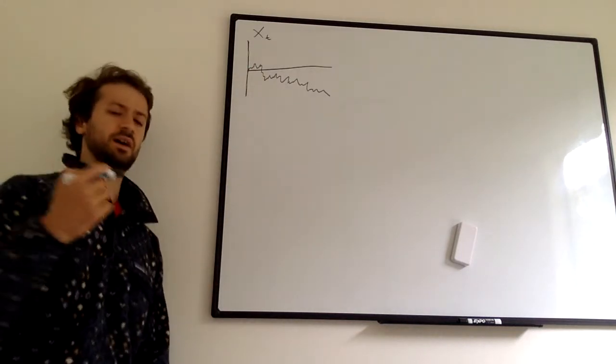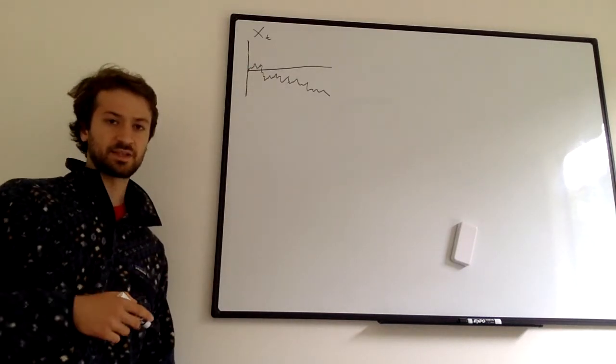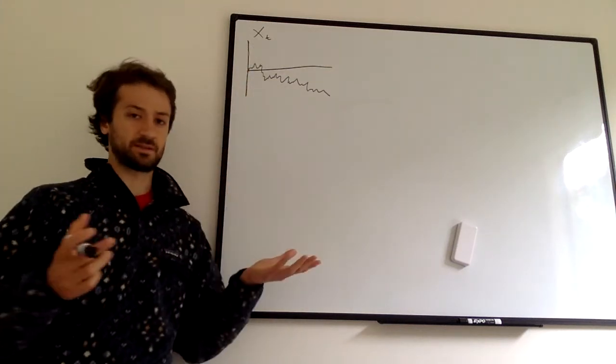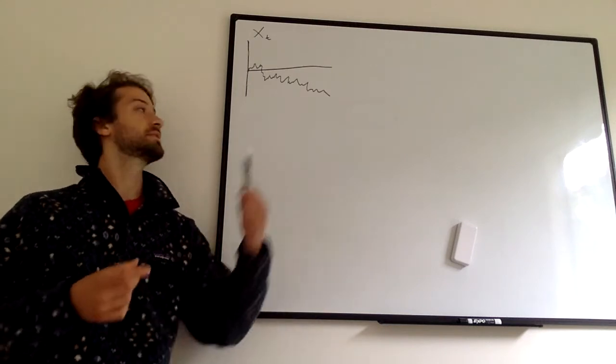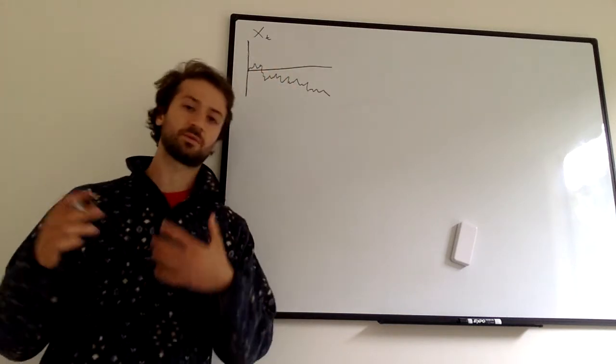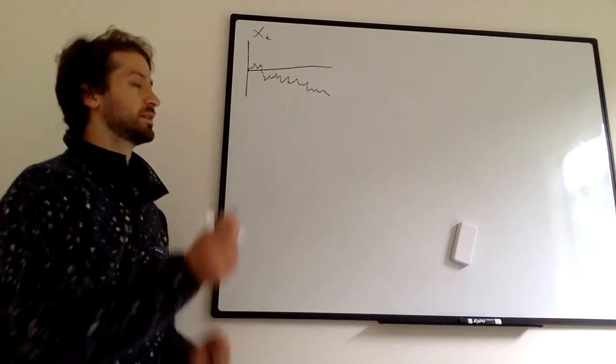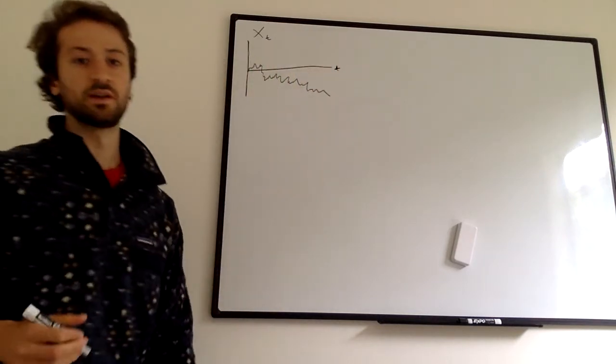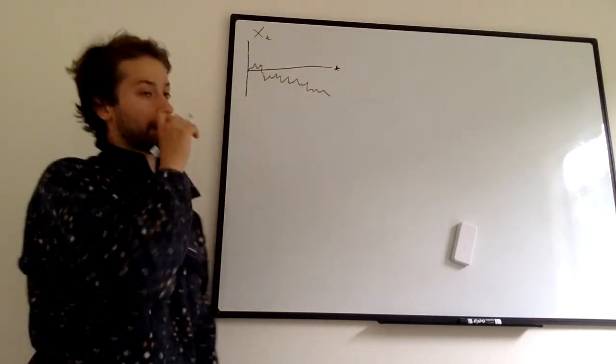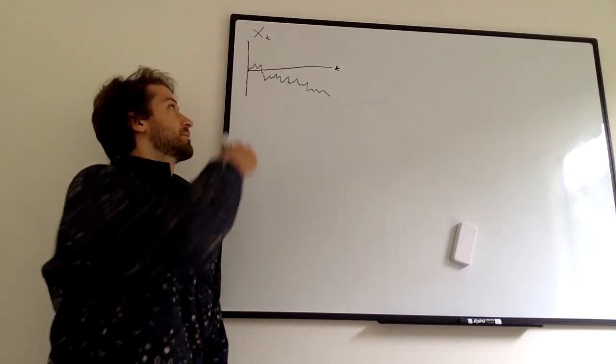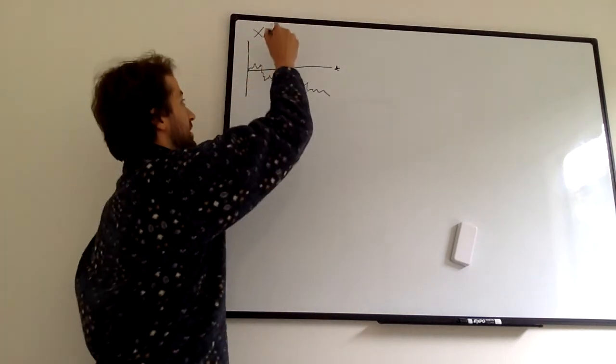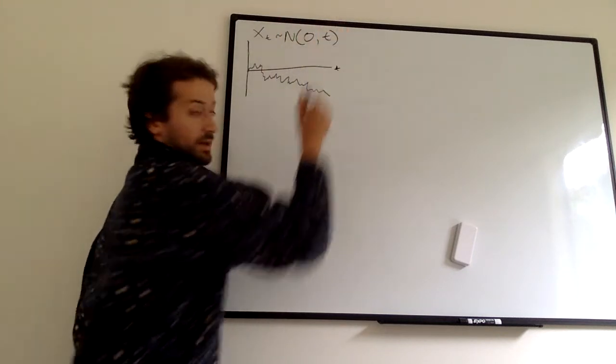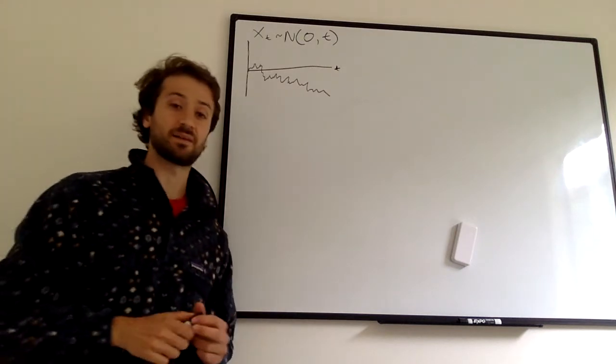Brownian motion is a continuous stochastic process, exists in continuous time. We have this value x sub t, that's the random variable of the stochastic process. It's indexed at t because stochastic variables are random variables that evolve through time. So here I have my x-axis is t, and I have this Brownian motion sort of bouncing around. In our last video we talked about the definition of Brownian motion: x sub t has a normal distribution with mean zero and variance time t.